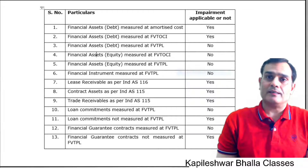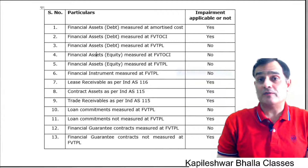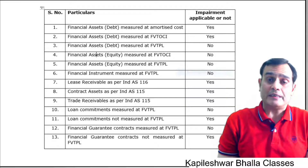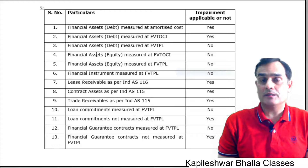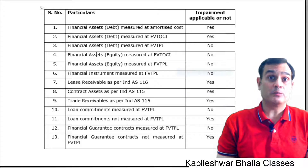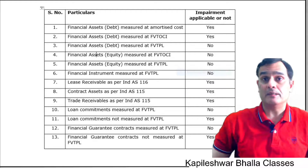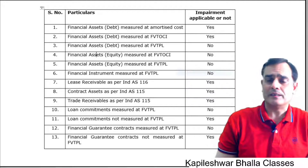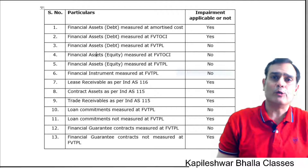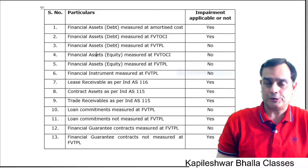As you can see, there is a list of almost 13 items which I have taken, being evaluated for whether the ECL model is applicable or not. But you don't need to remember any list — it is pretty logical in nature.